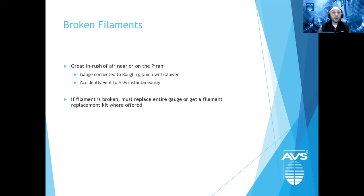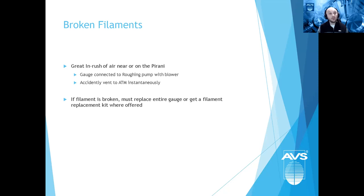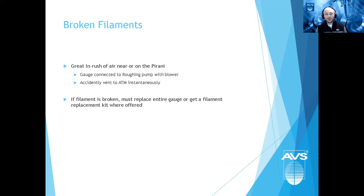Broken filaments are another failure mode, usually caused by a large inrush of air — accidental venting, or pumping down too quickly with a large roots blower. These filaments are very small and delicate; a significant inrush or back purge will likely break them. Most gauges will indicate this with a 'bad' reading or '999'. You then need to replace the gauge or use a filament replacement kit if one is available.